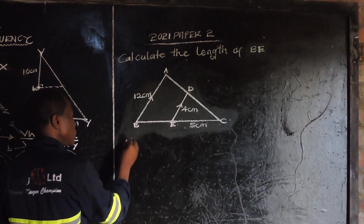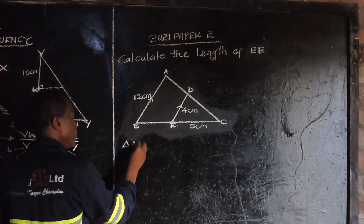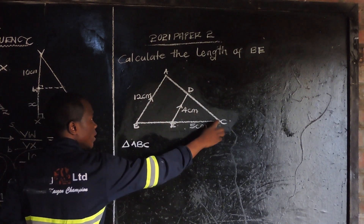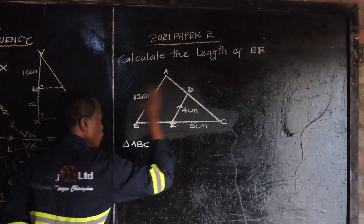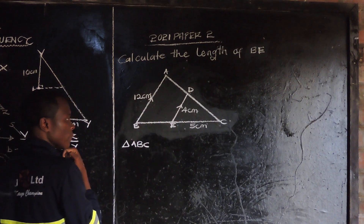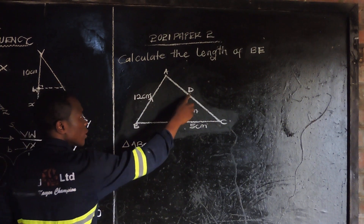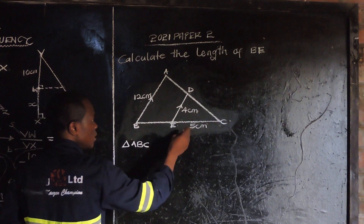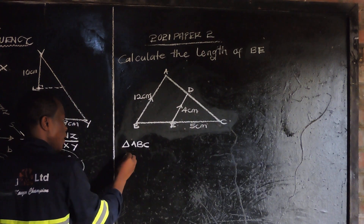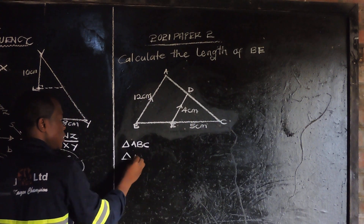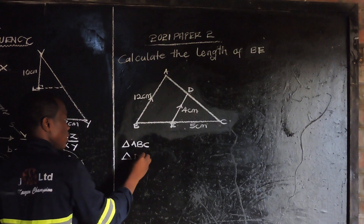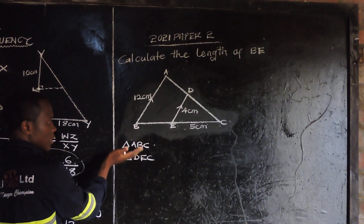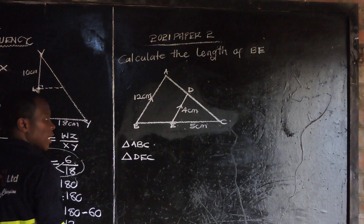I have a big triangle ABC, which is this big triangle. And there is also a smaller triangle DEC.